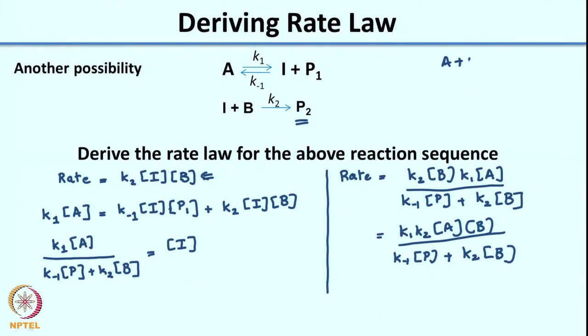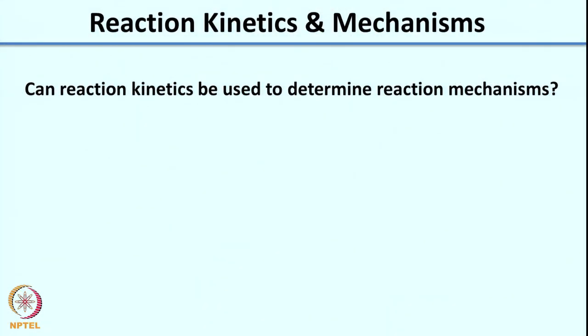For the simple transformation A plus B going to P, depending on the mechanism one can have multiple rate laws. We now need to think about how these are useful in determining reaction mechanisms. Can reaction kinetics be used to determine reaction mechanisms? Think about this — we have seen how a simple A plus B going to P can produce different rate laws under different mechanistic scenarios.